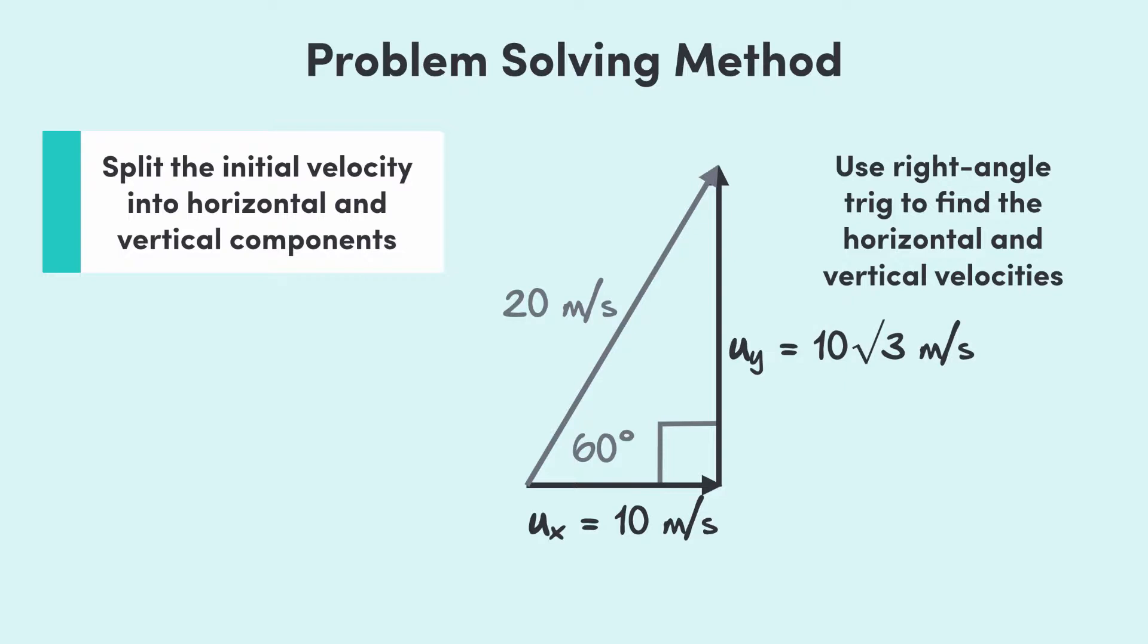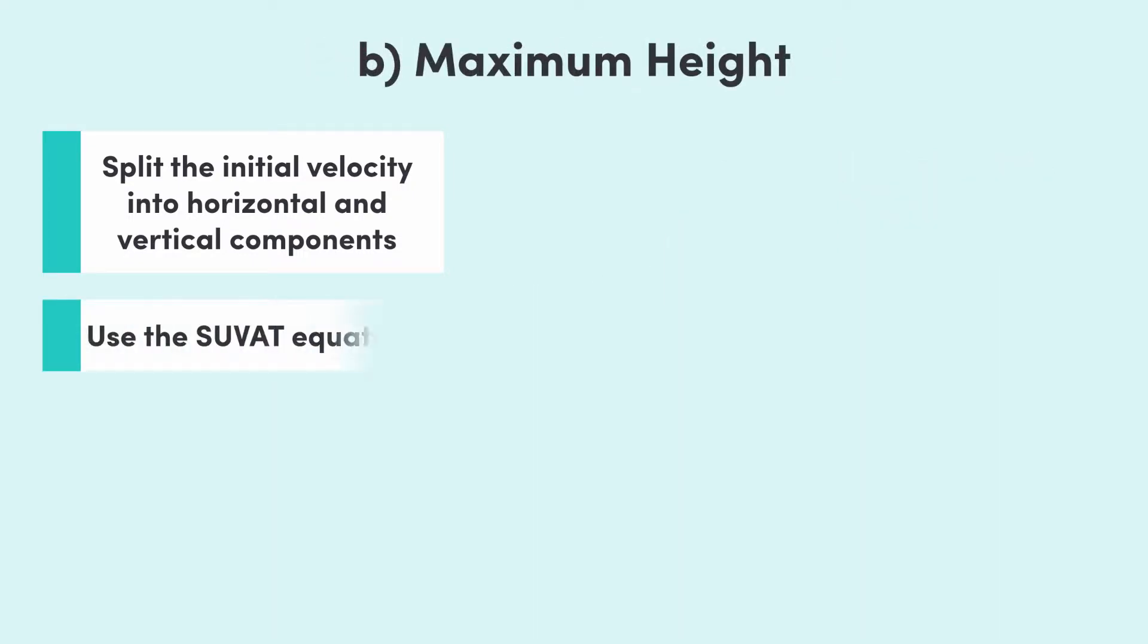Now, you can round the vertical velocity to 17.3 meters per second if you want, but I'd recommend using the exact value in your working and only round it at the end. Okay, so now we have the initial horizontal and vertical velocities. We can use the SUVAT equations to find what we're looking for. First though, we'll define the upwards direction to be positive since we'll be working with vectors.